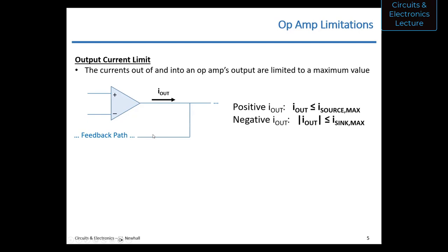This is why the actual values of resistors matter in op amp circuits — not just their ratio, which sets the gain. If you use really small resistors in your feedback path, by Ohm's law you'll get a lot of current flowing through that path, which consumes your maximum output current budget. So the actual resistor values, not just the ratio, are important in the design.